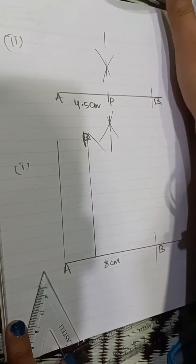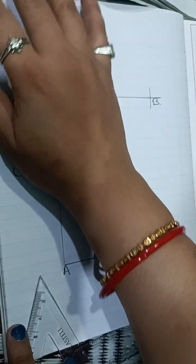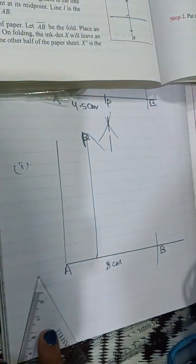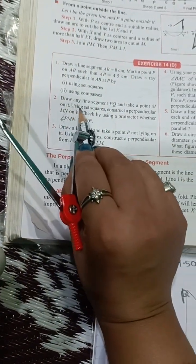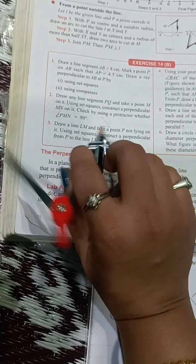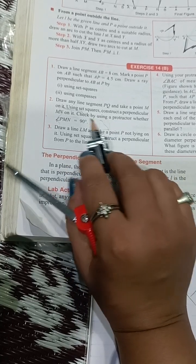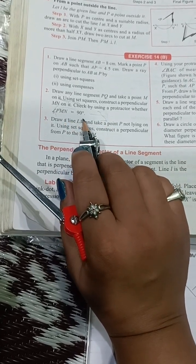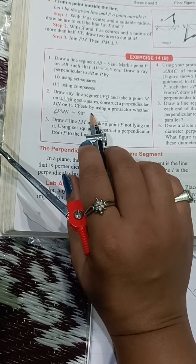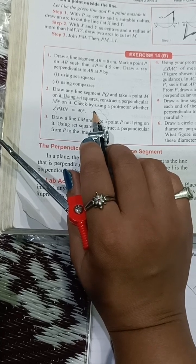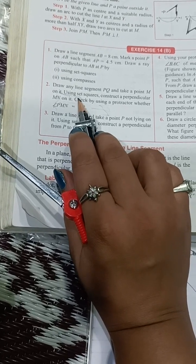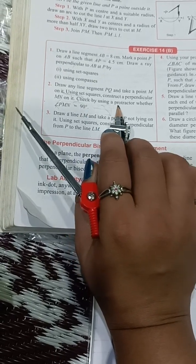Using the set square, this is the perpendicular to AB at B. Now question number two: Draw any line segment PQ and take a point M on it. Using set squares, construct a perpendicular MN on it. Check by using a protractor whether angle PMN is 90 degrees or not. First draw the line segment PQ and take a point M on it, then draw the perpendicular MN.